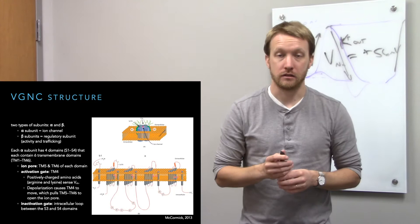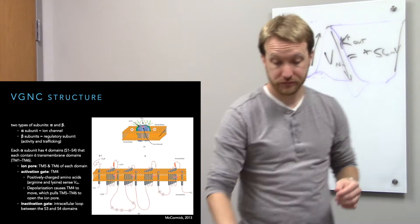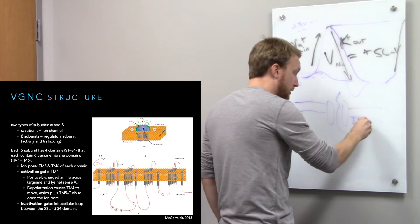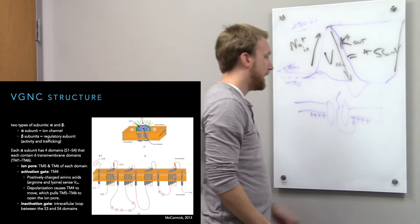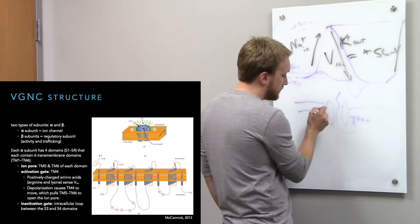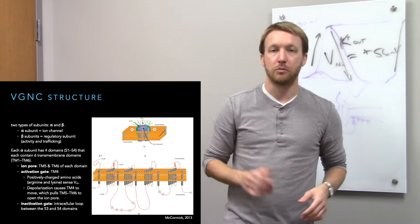The activation gate is the fourth transmembrane domain, which has positively charged amino acids that respond to membrane potential changes. When sodium rushes in during depolarization, the first thing it does is line the membrane. Those positive charges are detected by the voltage sensor protein embedded in the membrane, causing it to move and pull open the ion pore.